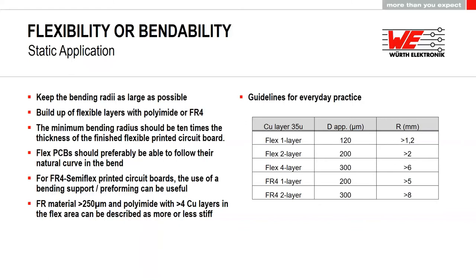For everyday practice, here are guidelines: polyamide constructions with flex area thickness from 120 to 300 microns show minimum bending radii on the right side of the table. For FR4 semi-flex or bend-flex, the thickness is higher than for the smallest polyamide constructions, and for the same thickness the bending radius required is much higher than for polyamide.